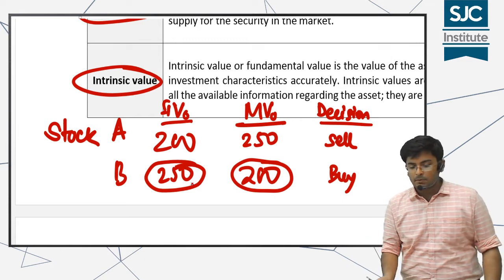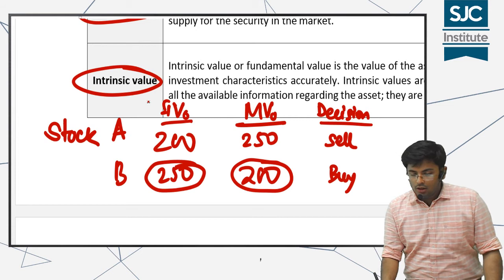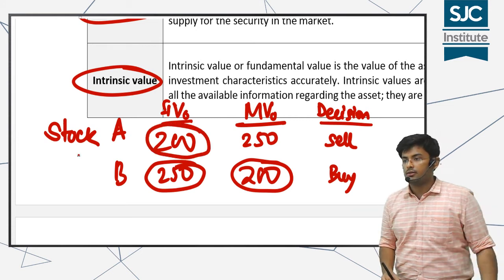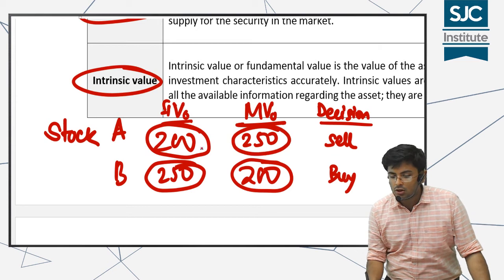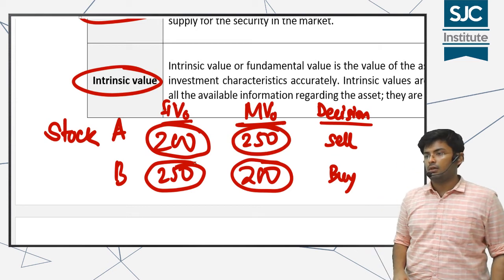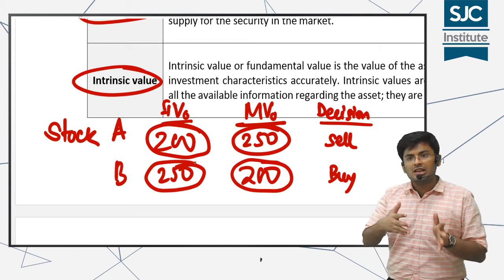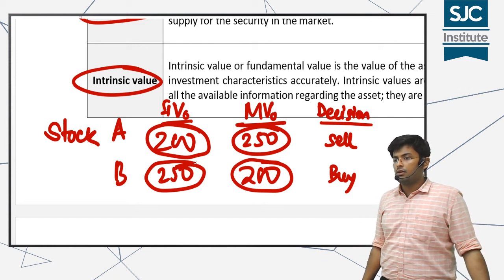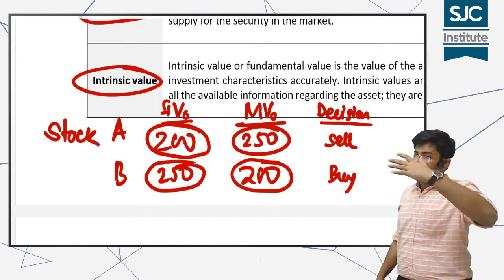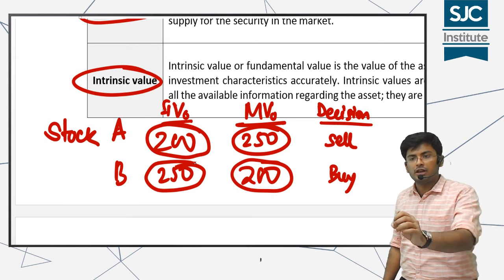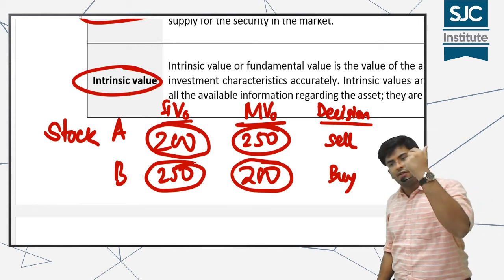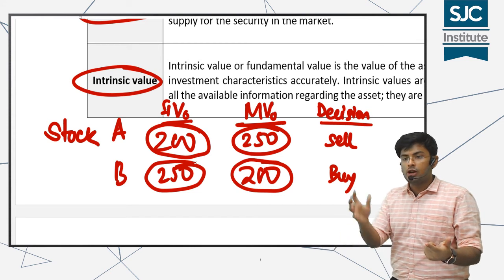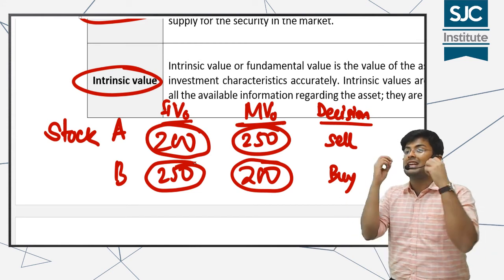Contrasting, there is Stock A, which you believe should have a price of 200, but the market price is 250. So you think that this is already trading at a premium. If you are already long on the share, book profits — because you think this stock deserves a value of 200 but has a market price of 250, so the market is already giving too much. Let's sell.